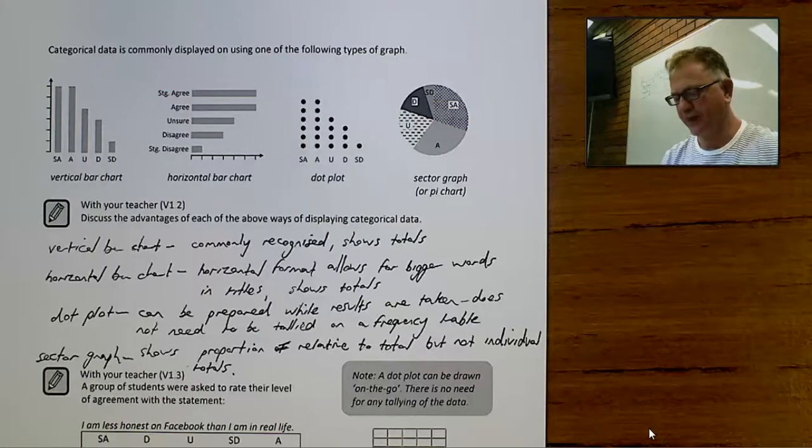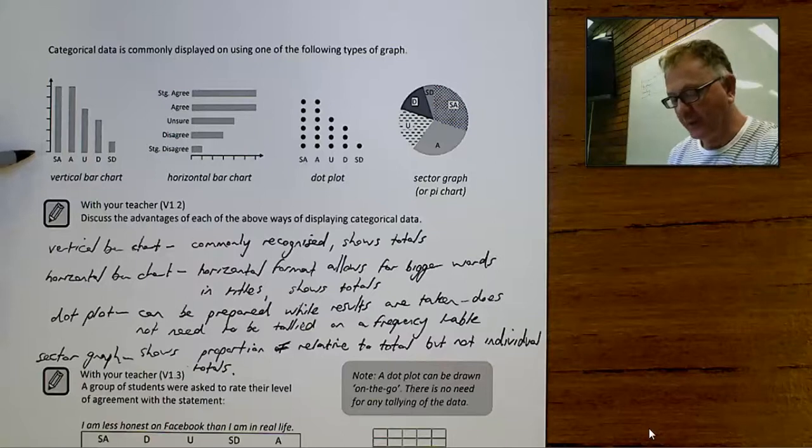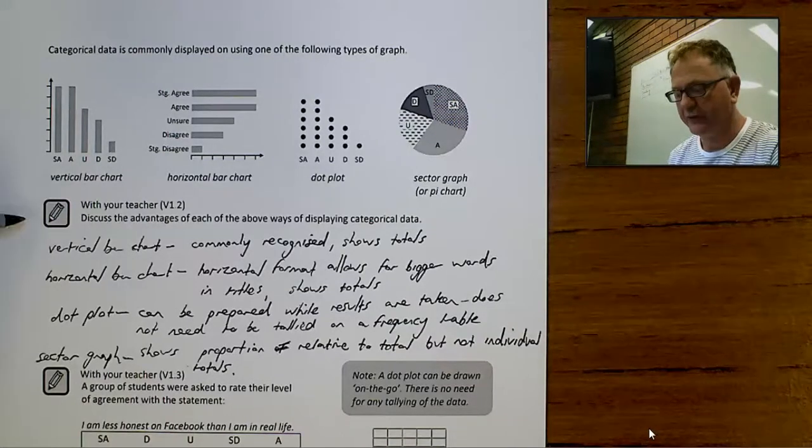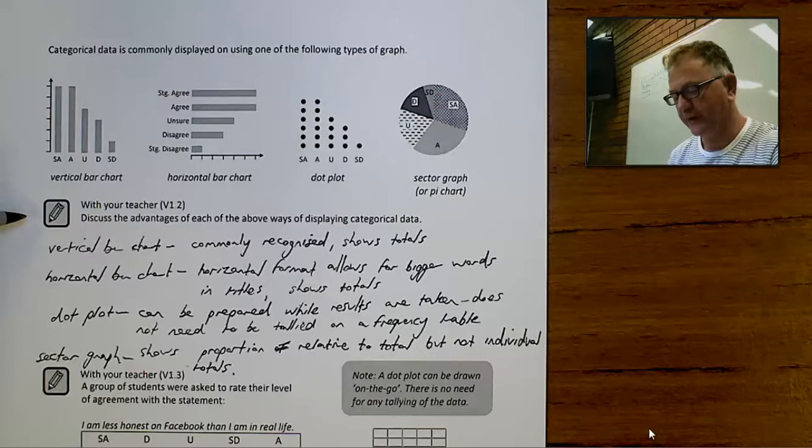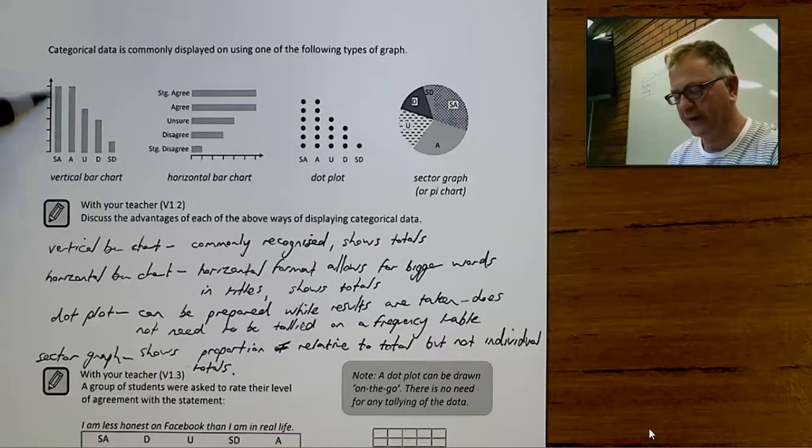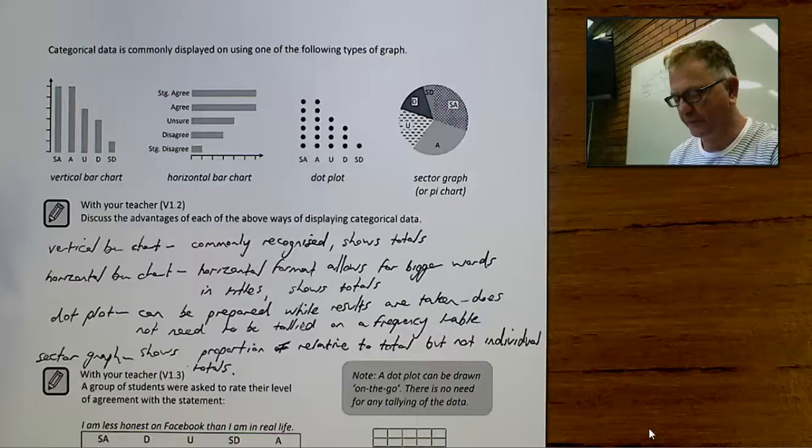The vertical bar chart is a very common way of doing it, and so it's very easy for people to recognize. The other advantage is it shows exactly what the totals are by having a scale up the side.